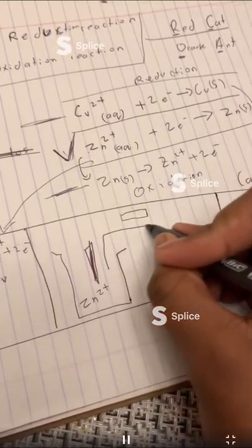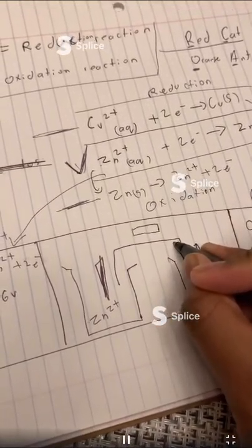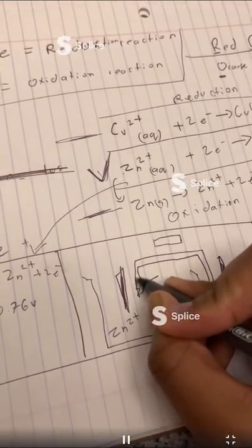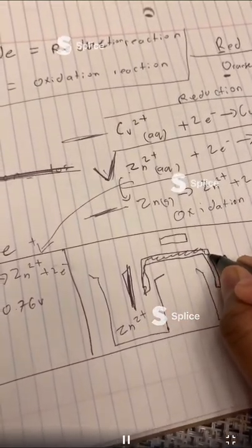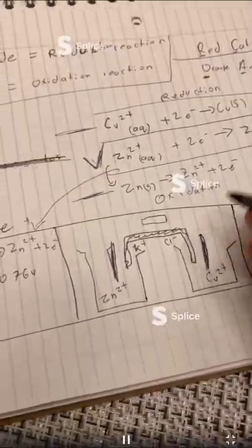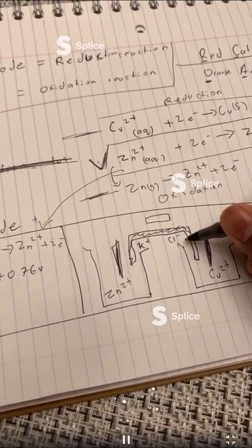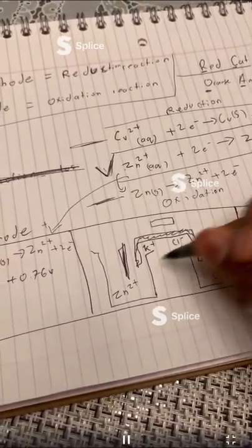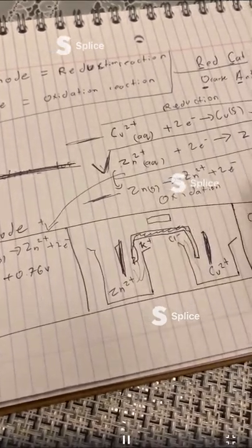A bit about the salt bridge. This can be anything. In this one you can just put it as potassium chloride, KCl. And the salt bridge is in place so that when this goes out, this can come in, and then this goes out, the positive can come in.